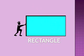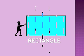This is a rectangle. It has four straight sides. Two are long and two are short. The lines that are across from each other are equal, or the same.